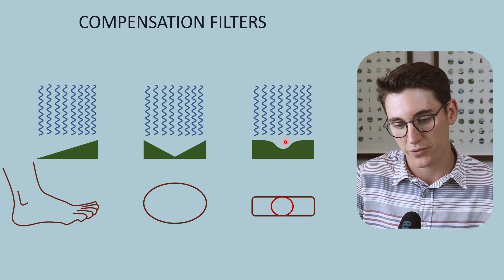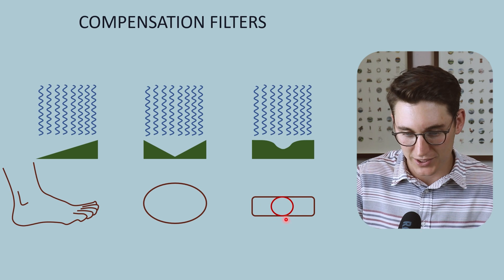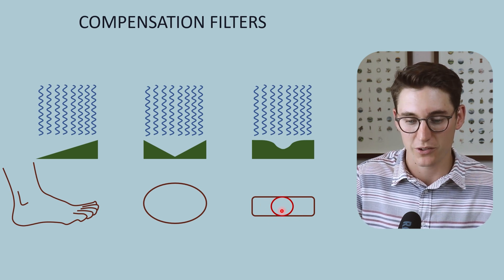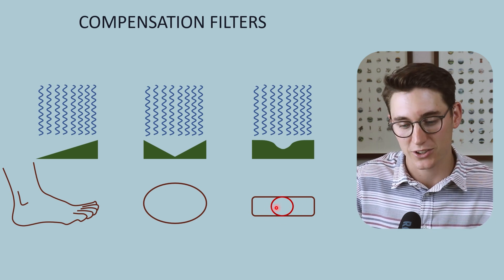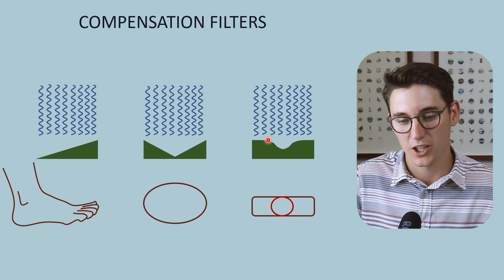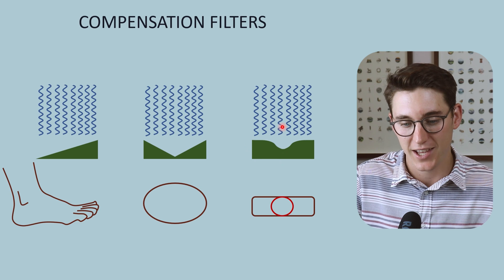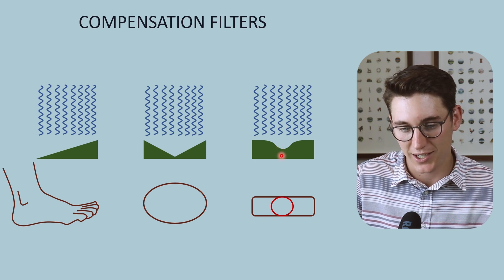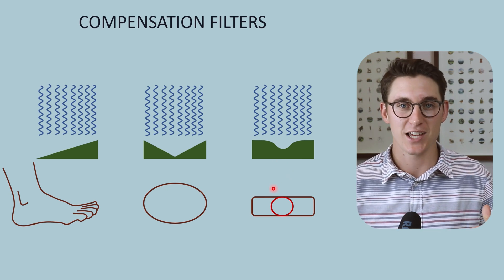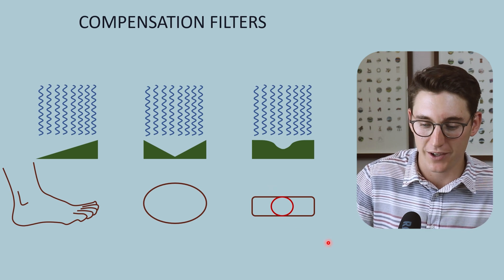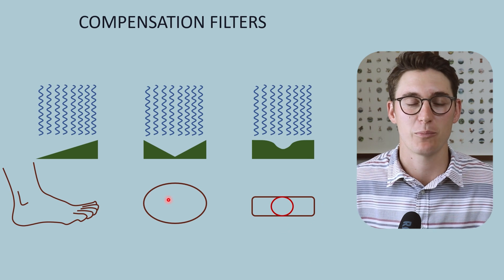A trough filter is used for chest imaging, where the mediastinum — containing the heart, great vessels, and sternum — is much more attenuating to x-rays than the peripheral lungs. The thicker parts of the trough filter attenuate the periphery more, while the thinner trough section over the mediastinum attenuates less. This compensates for the different attenuation within the patient and allows for more even exposure to the x-ray detector.